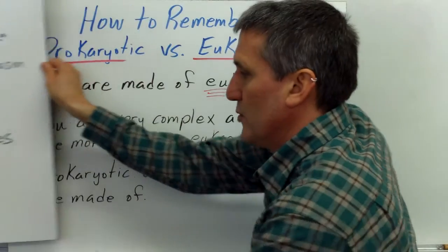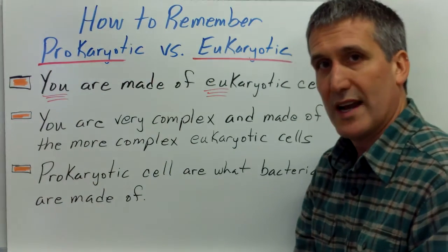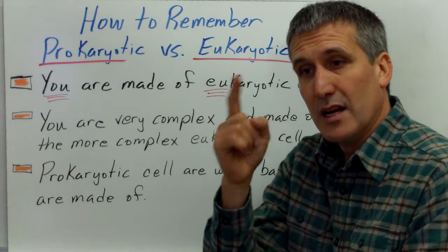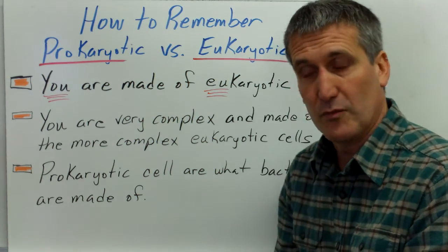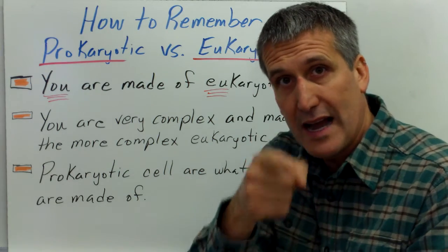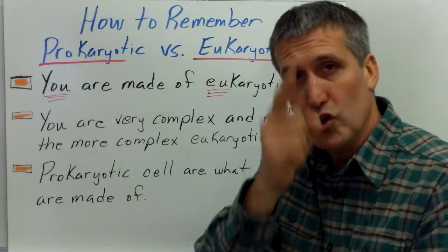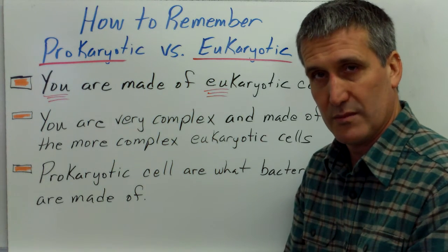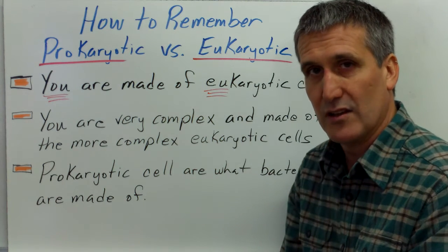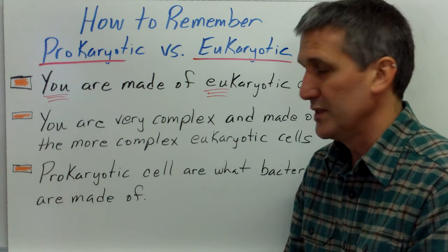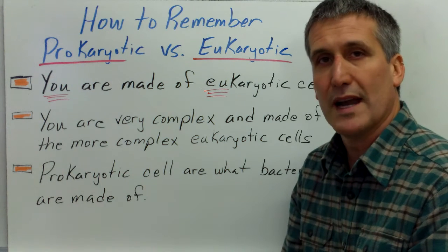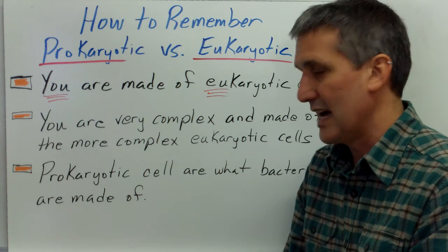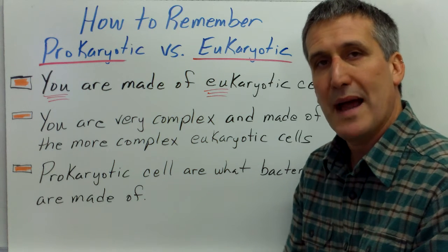So how do you remember the difference between prokaryotic and eukaryotic cells? The way I remember it is to think of somebody pointing at me and saying 'eukaryotic.' If you picture somebody saying 'eukaryotic,' that's because you are made of eukaryotic cells, and you are a more complex multicellular organism — so eukaryotic cells are the more complex type. That means prokaryotes are the bacteria cells, the less complex, smaller bacteria cells.